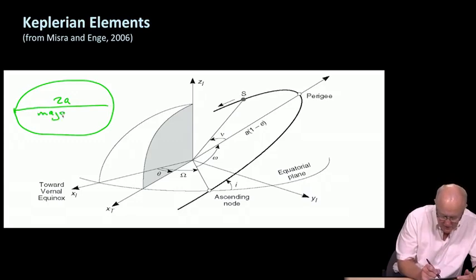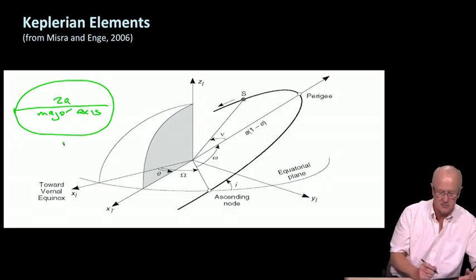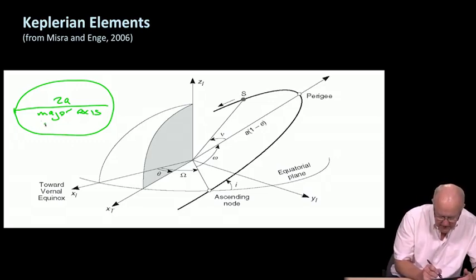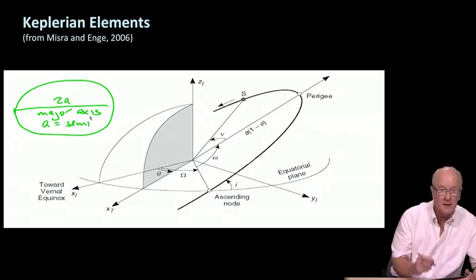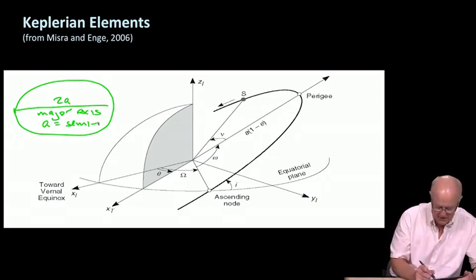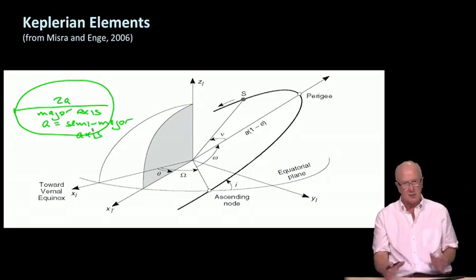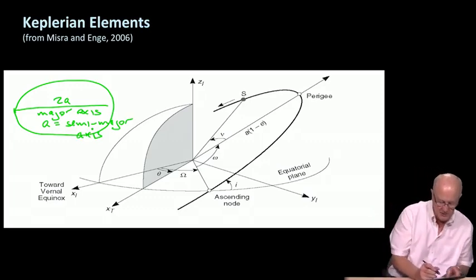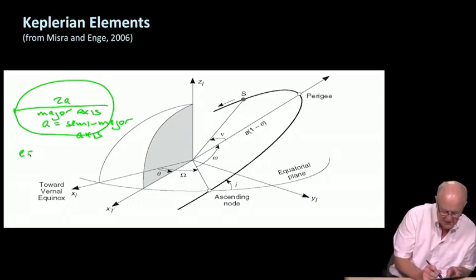This long axis is twice A. It's called the major axis, as opposed to the minor axis, which would cross in the shortest direction. What's sent is A, which is the semi, that is, half the major axis. So that's the first of the Keplerian parameters.